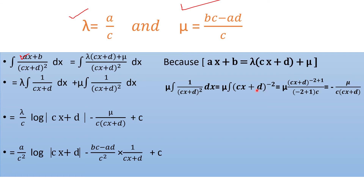For the second integral, write 1/(cx + d)² as (cx + d)^(−2). Integrating using the power rule: μ × (cx + d)^(−2+1) / (−2+1) × c = μ × (cx + d)^(−1) / (−c). This gives −μ / [c(cx + d)]. The first integral ∫1/(cx + d) dx gives log|cx + d| / c, so the first term becomes λ/c × log|cx + d|. The integration of the second portion is −μ / [c(cx + d)].